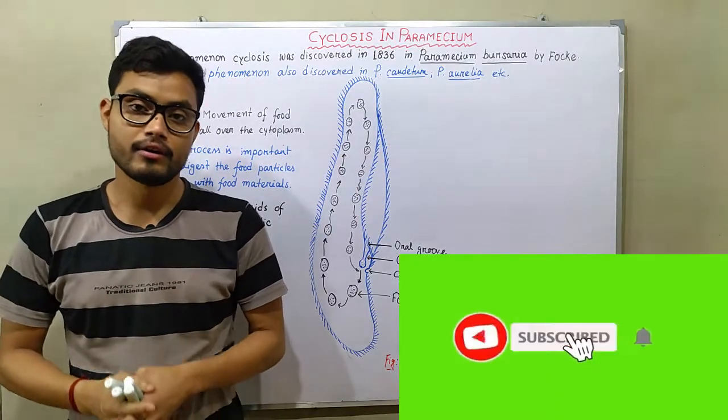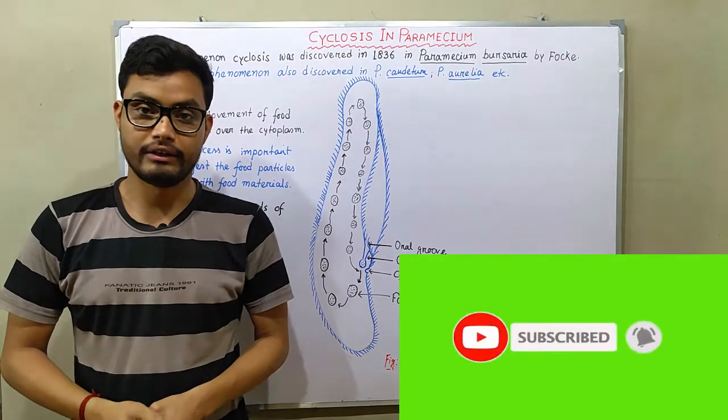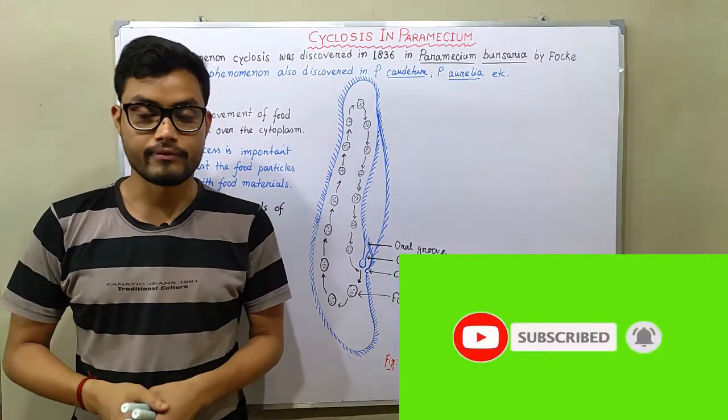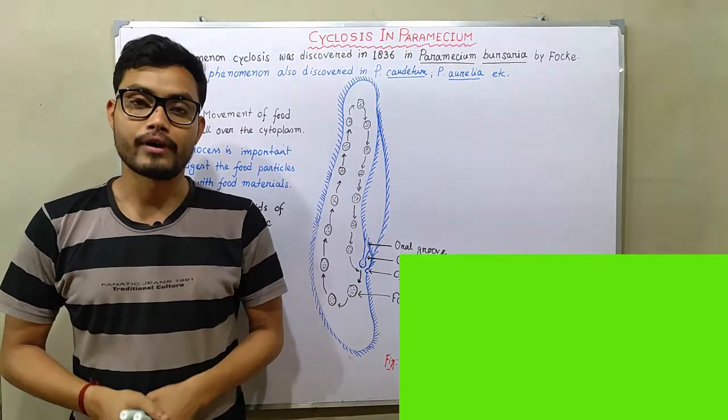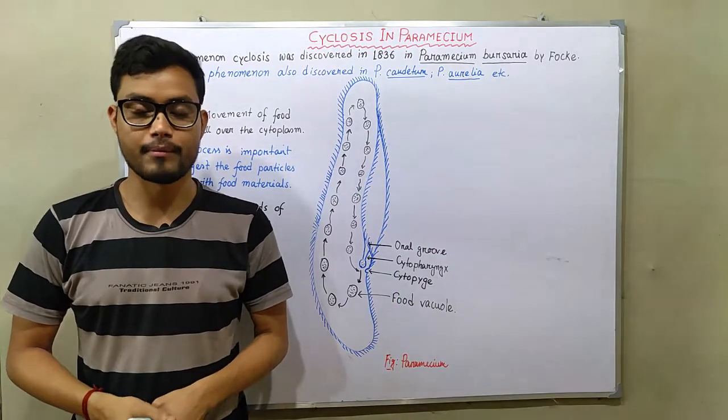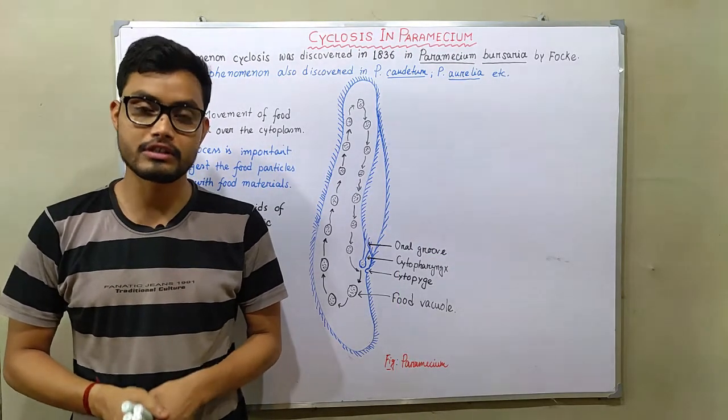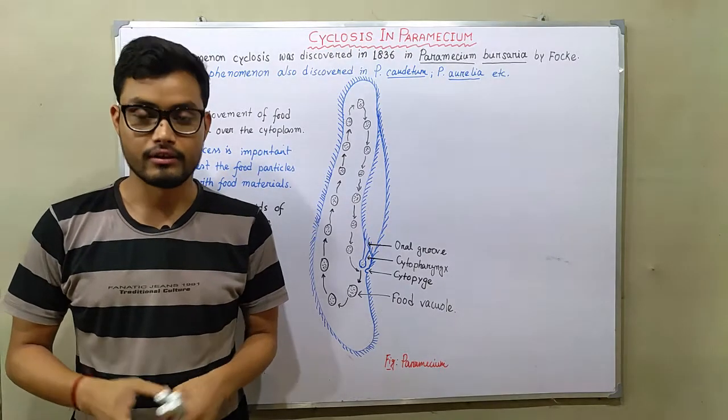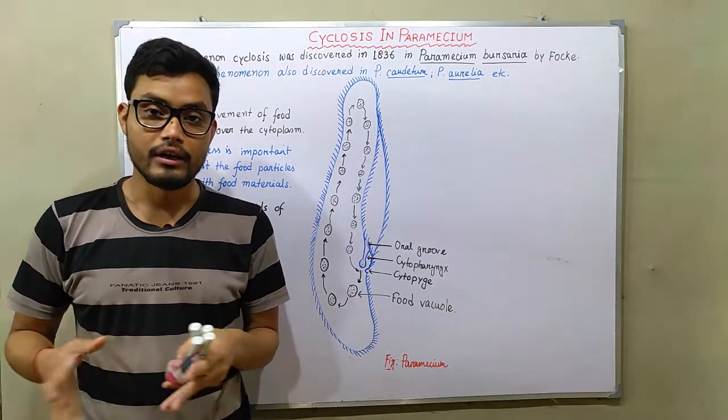Cyclosis is a kind of food vacuole movement in the cytoplasm of paramecium. Hello friends, welcome to biology concern. I am Animesh and in this video I am going to discuss about cyclosis, the movement of food vacuole inside the cytoplasm of paramecium.